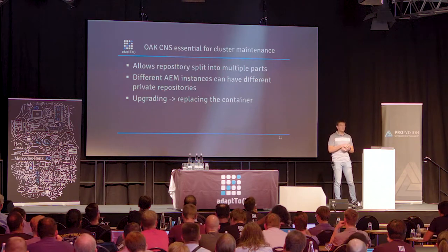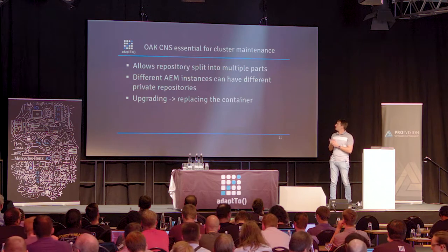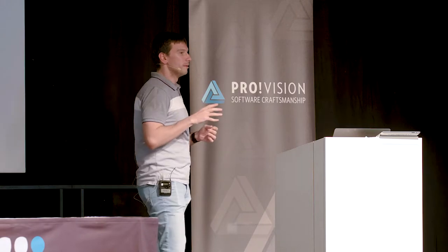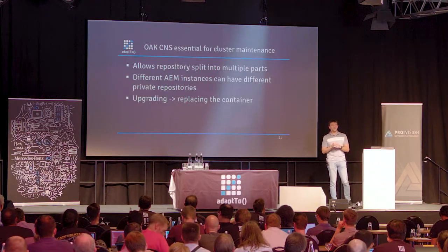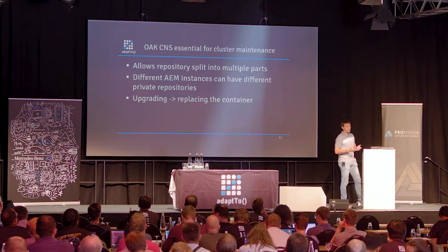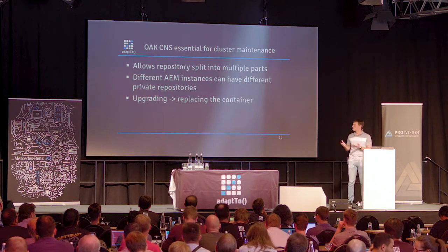The composite node store will also help us mitigate one of the original challenges. Previously the whole repository was being shared between all the instances; now each instance can have its own private local libs and apps. And basically, upgrading in this context means you don't drop a jar and wait for the upgrade process — you just replace the Docker container altogether, and you end up with a new version running.